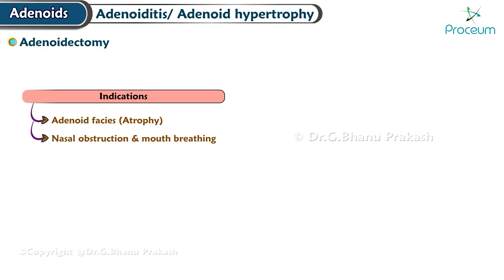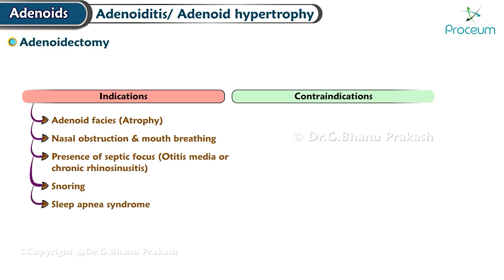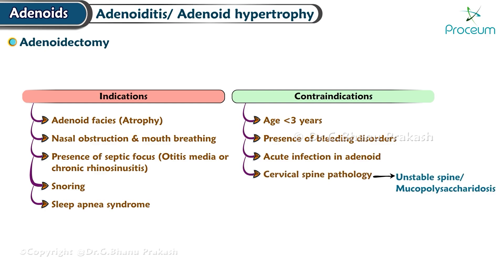Indications for adenoidectomy include: adenoid facies, nasal obstruction and mouth breathing caused by enlarged adenoids, presence of a septic focus such as otitis media or chronic rhinosinusitis, snoring related to adenoid hypertrophy, and sleep apnea syndrome. Contraindications include: age younger than three years, presence of bleeding disorders, acute infection in the adenoid area, cervical spine pathology such as an unstable spine or mucopolysaccharidosis, and epidemic of poliomyelitis.